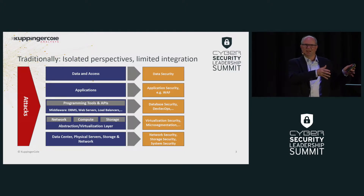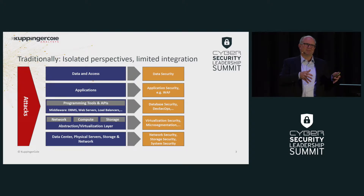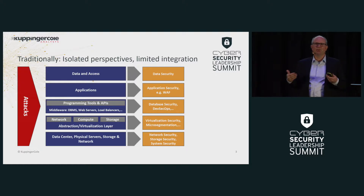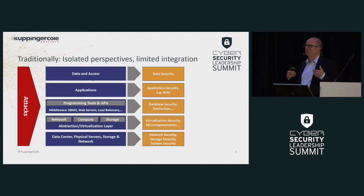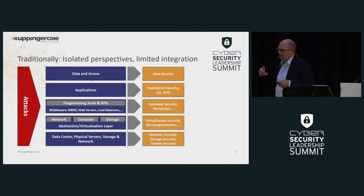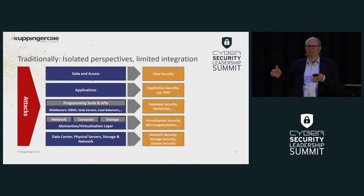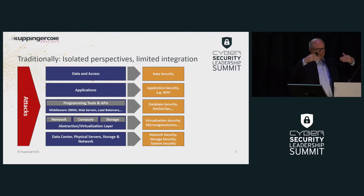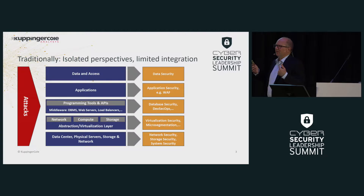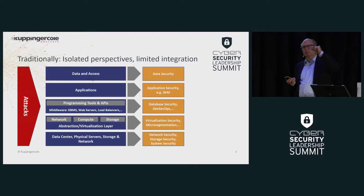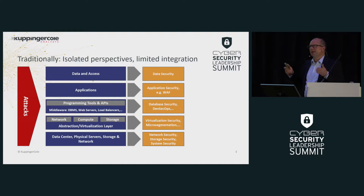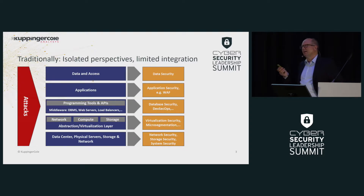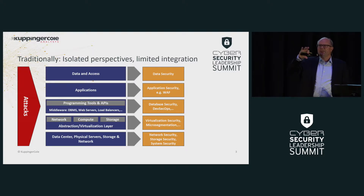We have a lot of technologies in our IT, a lot of different attack vectors, and a lot of technologies to protect the entire thing — which means we end up in a zoo of cybersecurity technologies. If you leave all of that isolated, it's pretty tough to understand what is happening, particularly because many attacks — especially the more targeted, advanced types — tend to span several of these layers and several systems.